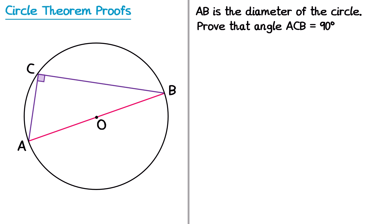To start this proof, I'm going to draw a line from O to C. This line is a radius of the circle, and so is the line from O to A and O to B, so all of those lines are the same length. We can indicate this on the diagram by drawing a line over each of those lines. Every step that we mark onto the diagram, we're also going to write down in words as part of our proof. So OA equals OB equals OC, because they are all radii — radii being the plural of radius.